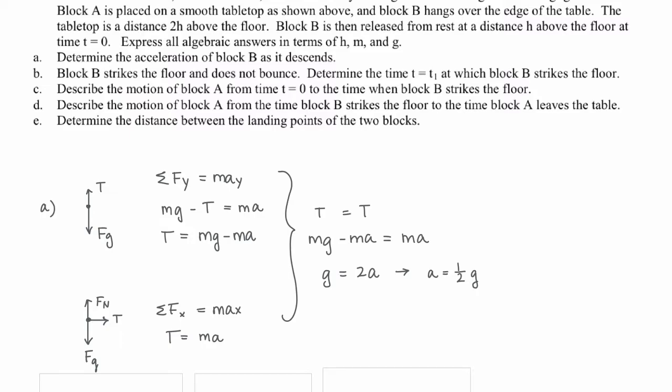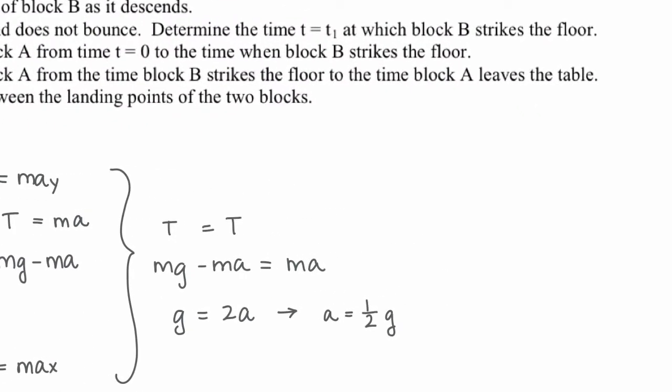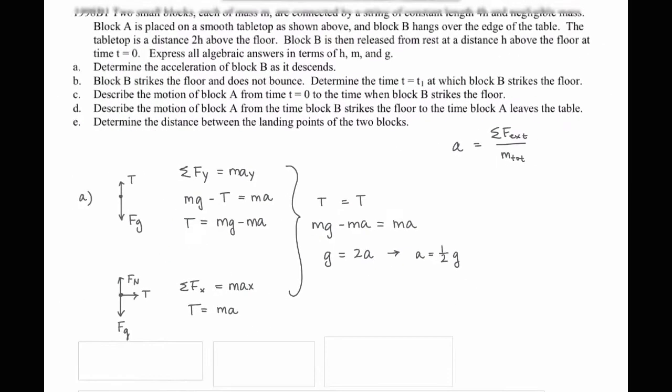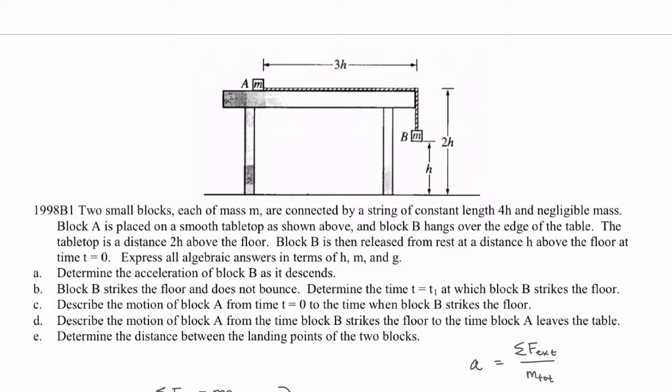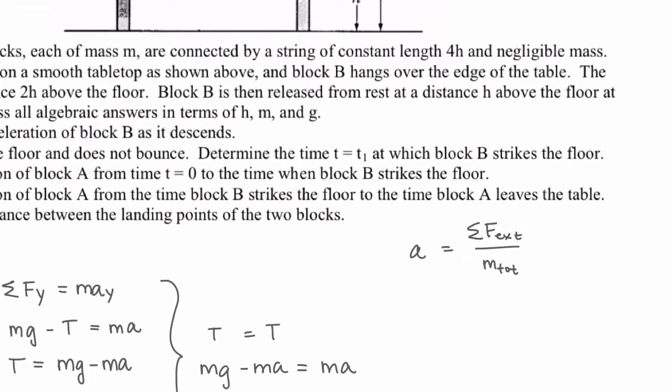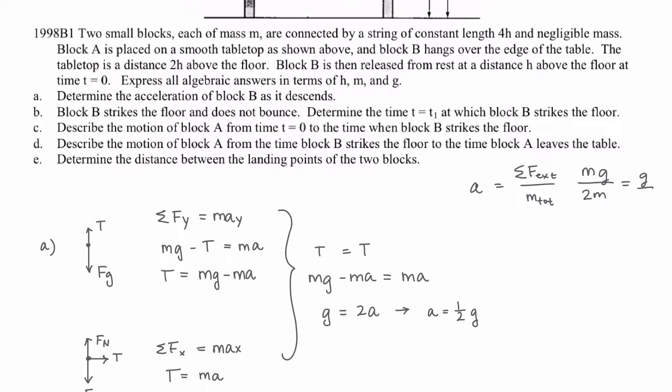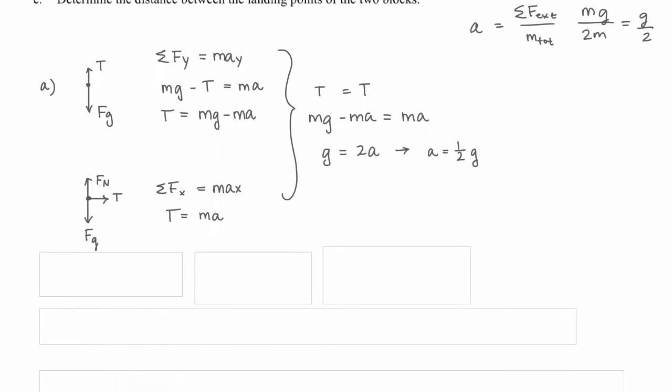There's another way to solve this - the shortcut method: sum of all external forces divided by total mass. The external forces is just the force of gravity acting on mass B. So mg divided by 2m gives us g over 2 automatically.